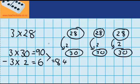So three times 28 must equal 84. Now let's try a harder question.